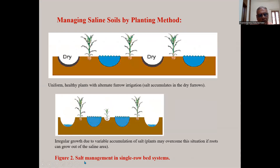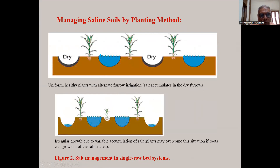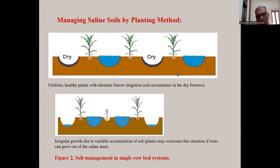In a single row bed system, uniform healthy plant growth is achieved with alternate furrow irrigation — salt accumulates in the dry furrows. Farmers in the Saurashtra area who have saline soil use alternate furrow irrigation for cotton and other crops for higher crop production. Irregular growth occurs due to variable salt accumulation, but it can be overcome if roots can grow out of the saline area.